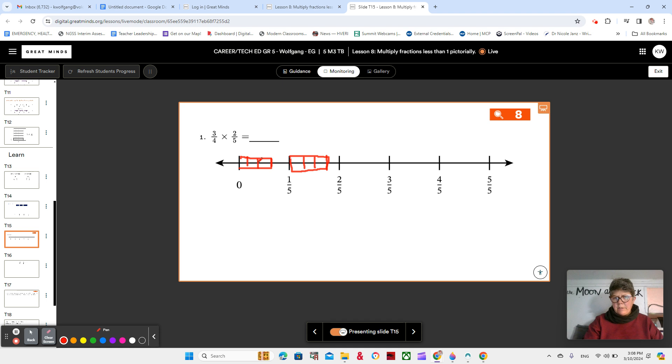So that would give me one, two, three, four, five, six. Six, one, two, three, four, five, six, seven, eight. So why is it not six eighths? Why is it six twentieths?